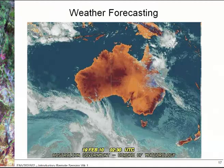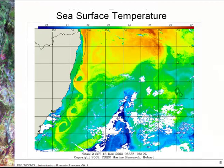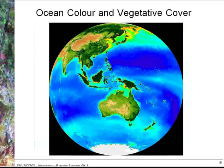Other things we can use remote sensing for include weather forecasting that you see on the evening news each day, looking at sea surface temperature and how this relates to coral bleaching. In this image off the east coast of Australia you can see the way currents are forming straight down the east coast. We also look at ocean colour to look at productivity in the oceans — phytoplankton, eutrophication, that sort of thing — and the amount of vegetation across different continents.